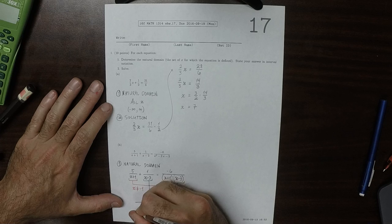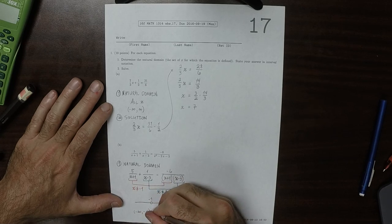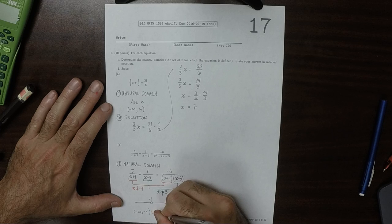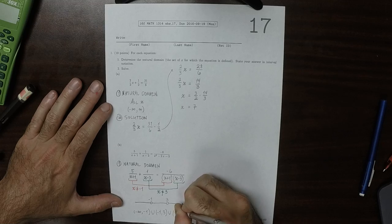So negative infinity to negative 1, that's the first interval, union, negative 1 to 3, union, 3 to infinity.